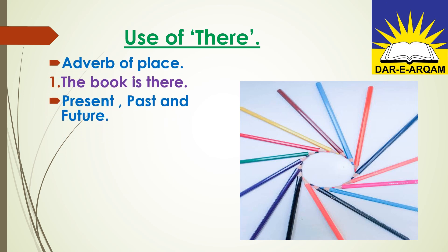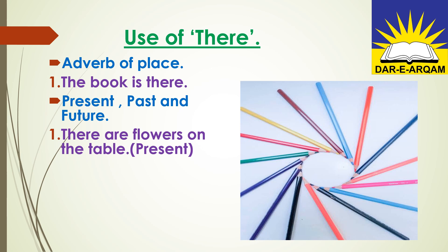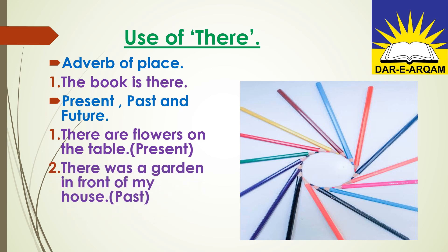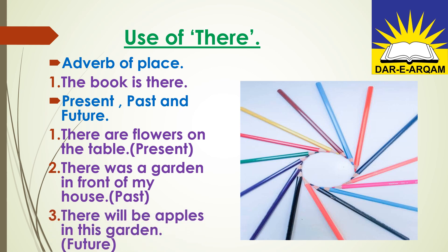One more point: adverb of place. When we are telling about something that a thing is at that place — for example, the book is there — we use 'there' to tell the place of the thing. Also, we use 'there' with present, past, and future time. For example: There are flowers on the table — present tense. There was a garden in front of my house — past tense. There will be apples in this garden — future tense. So we use 'there' with adverb of place and with all three tenses.